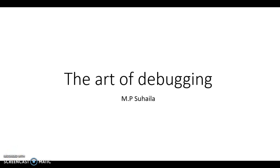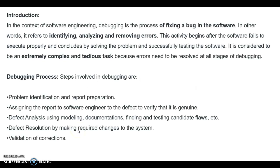Last class we discussed about the different types of testing strategies for web applications, object oriented programs, and conventional softwares. Next we move into the Art of Debugging topic. Debugging is the systematic process of identifying, analyzing and fixing bugs in the software.